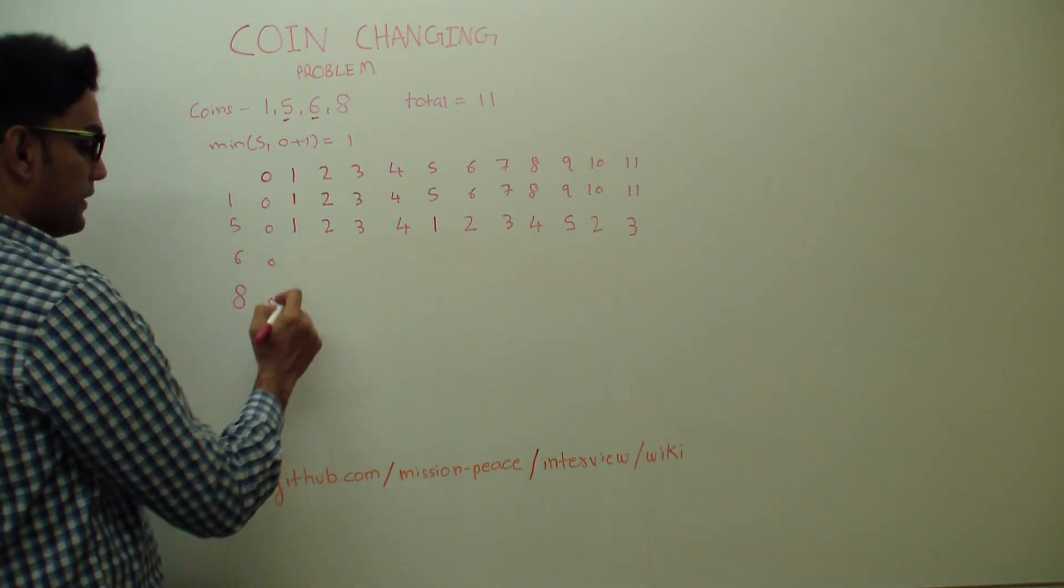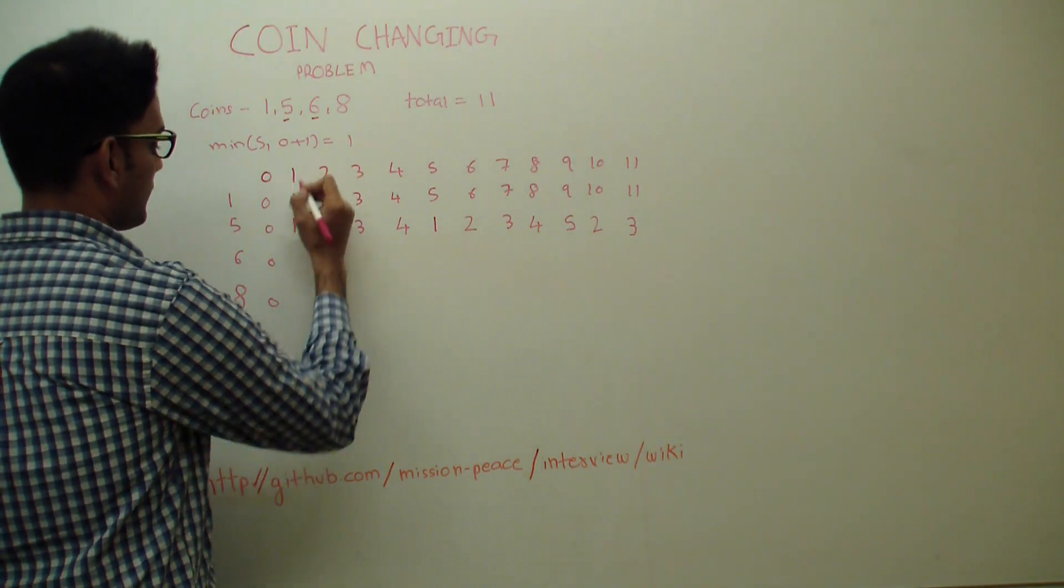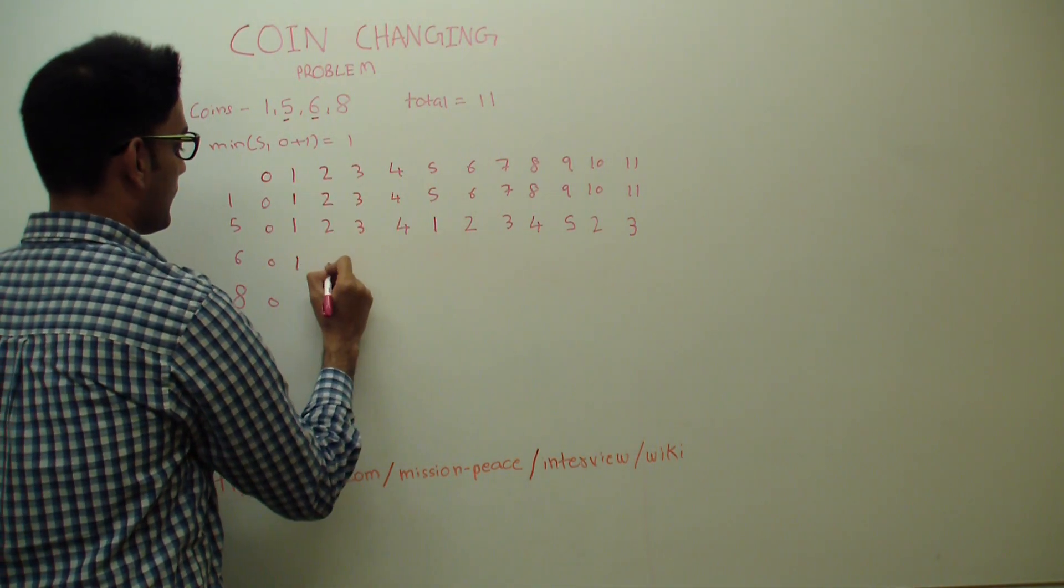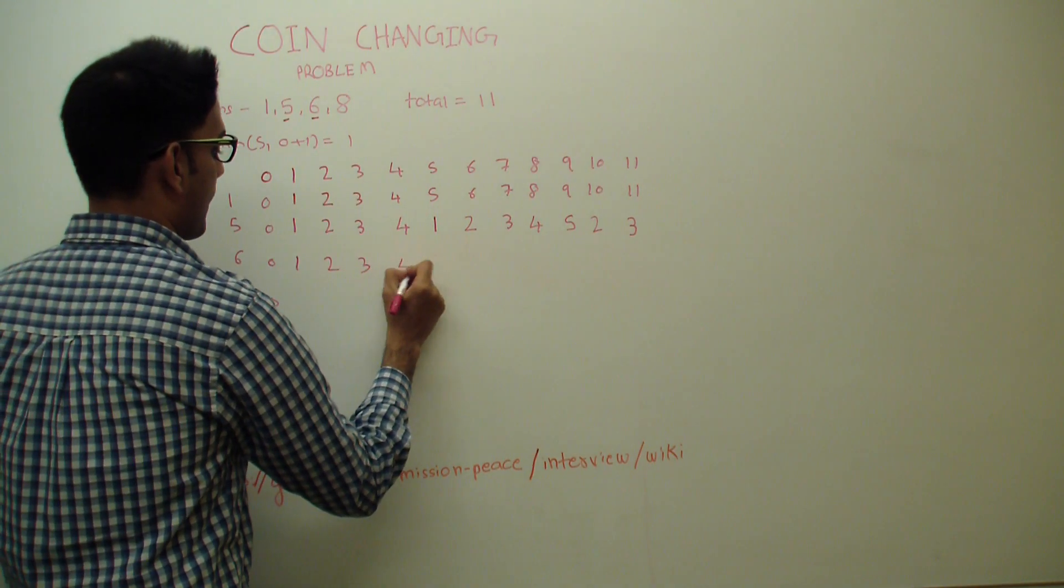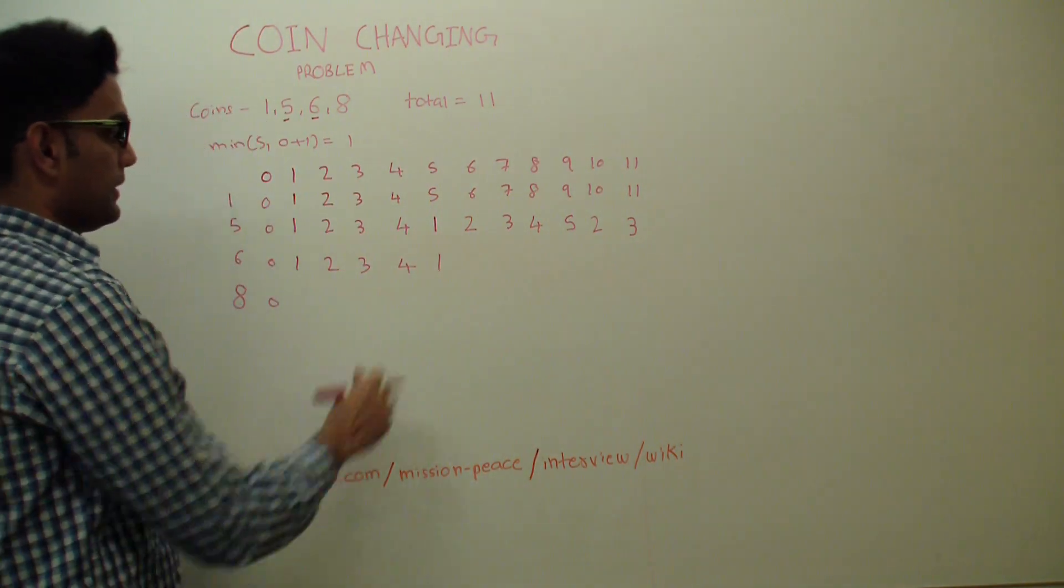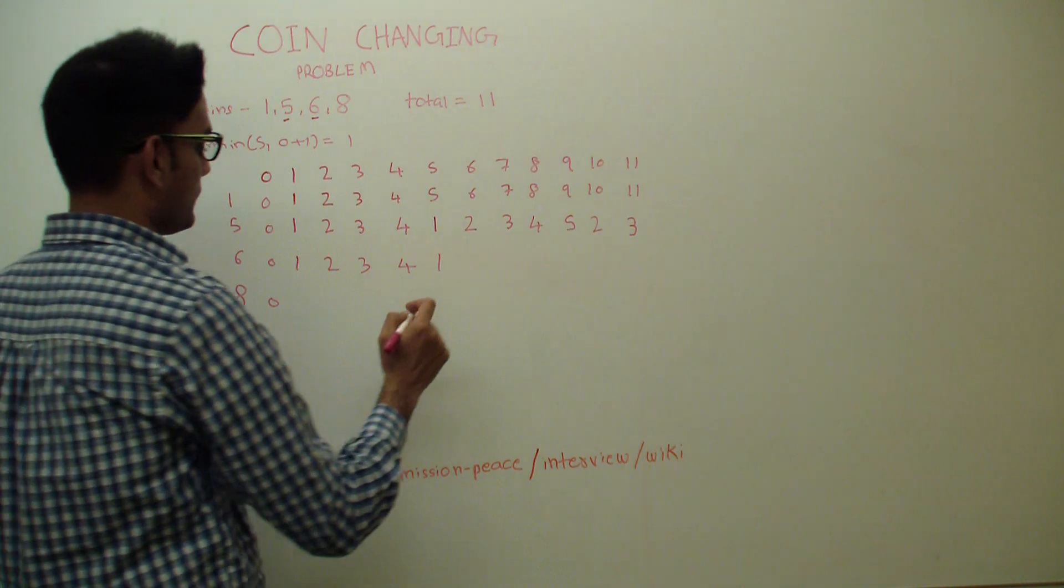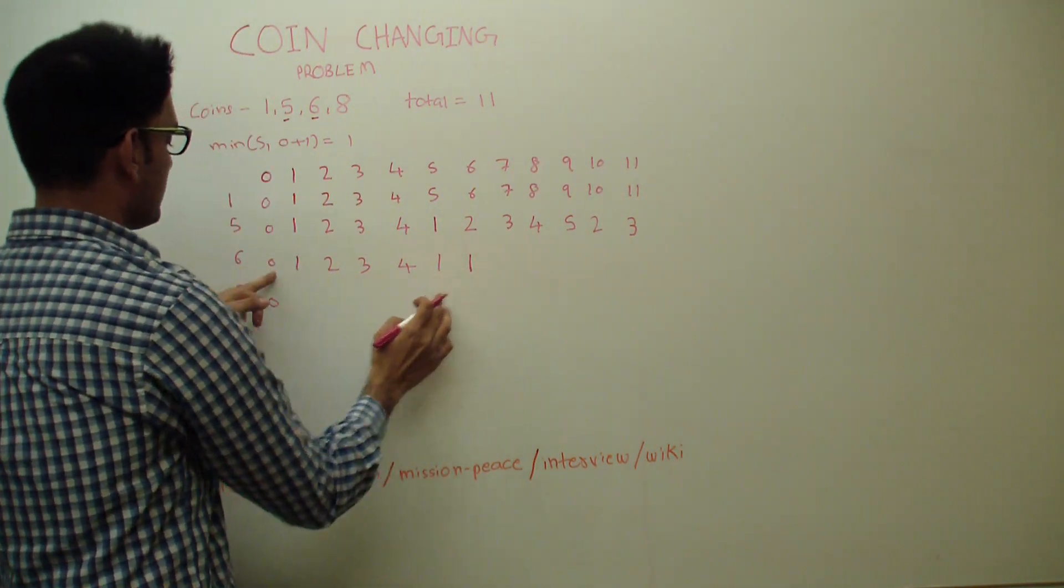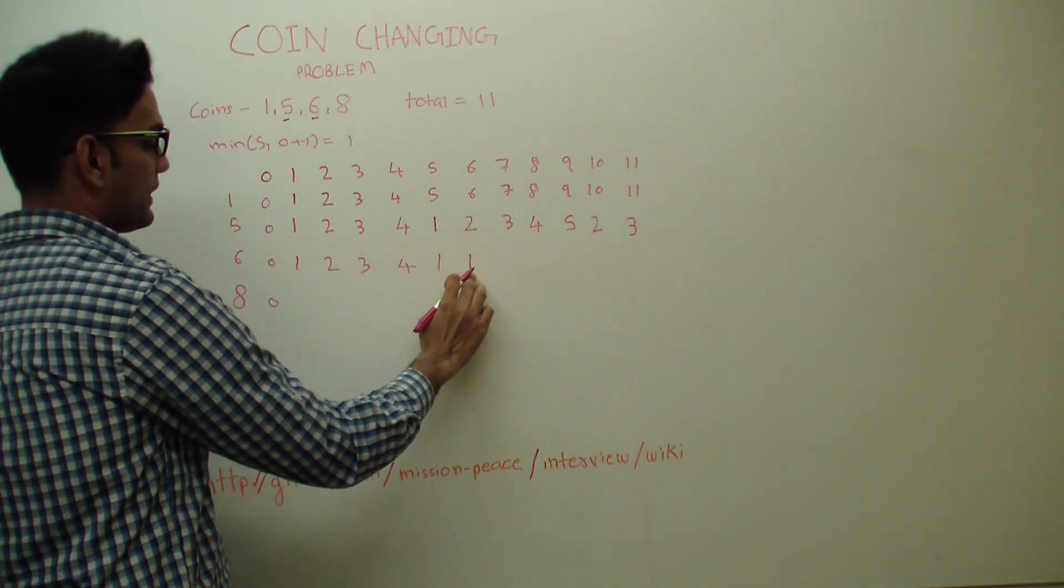Let's come to 6. So we'll get the values from the top up till 5 because 6 is not going to play any role till 5. To get 6, we'll use 1 again because we go back 6 here. We get 0. 0 plus 1 is 1.